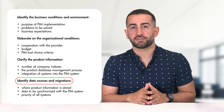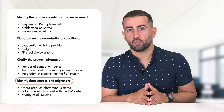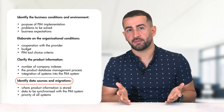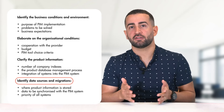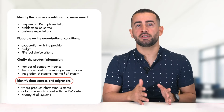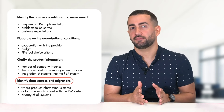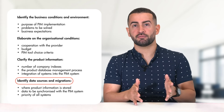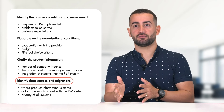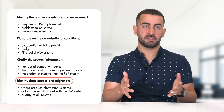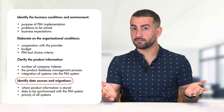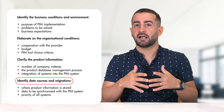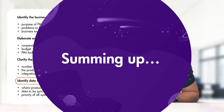Identify data sources and migrations: Where do you currently store product information? What kind of data do you need to synchronize with the PIM system? During synchronization, is it possible for the product information from two different systems to overlap? In that case, which systems will have higher priority?